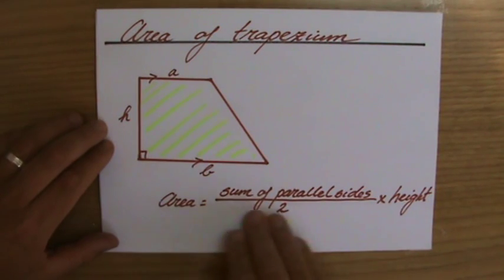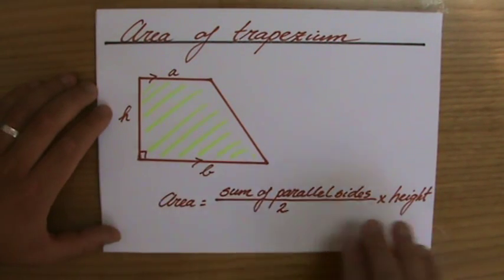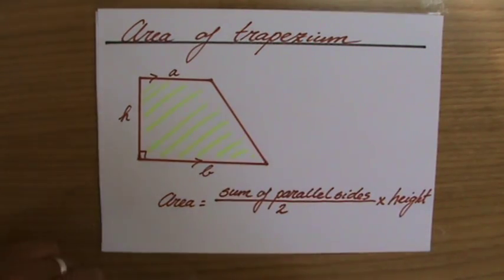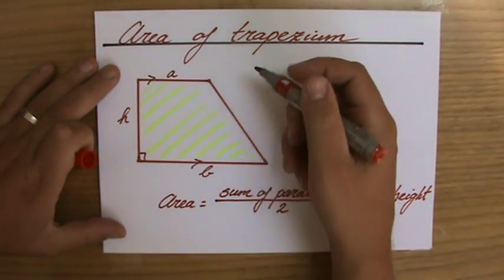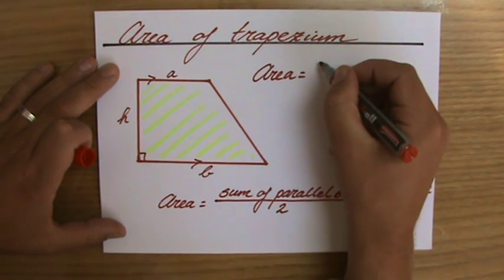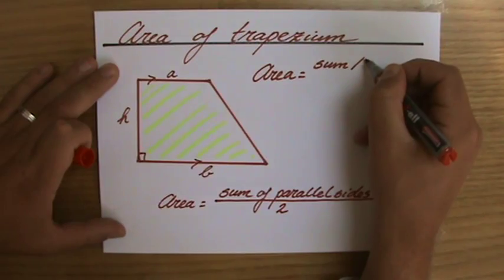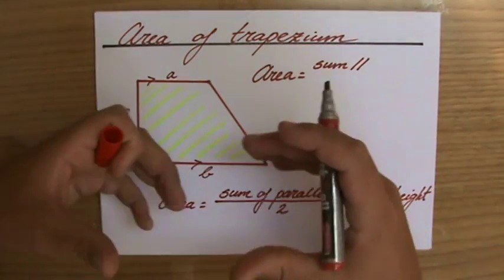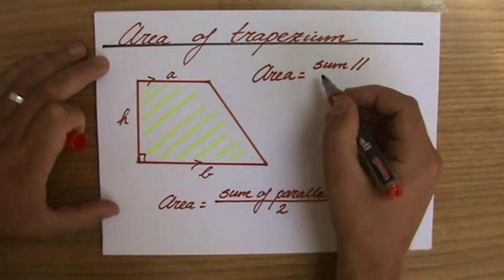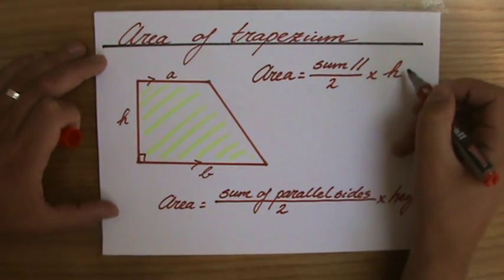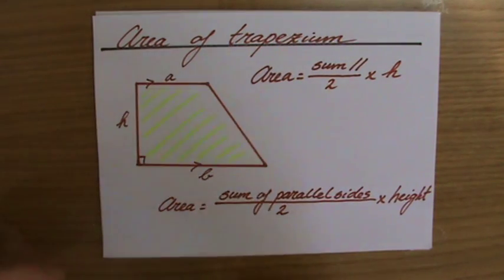Instead of writing down the sum of the two parallel sides divided by two times the height, I rather write down: the area equals the sum, and then I do two of these lines, which is the symbol of parallel lines. So the sum and the addition of those two lines divided by two times the height.